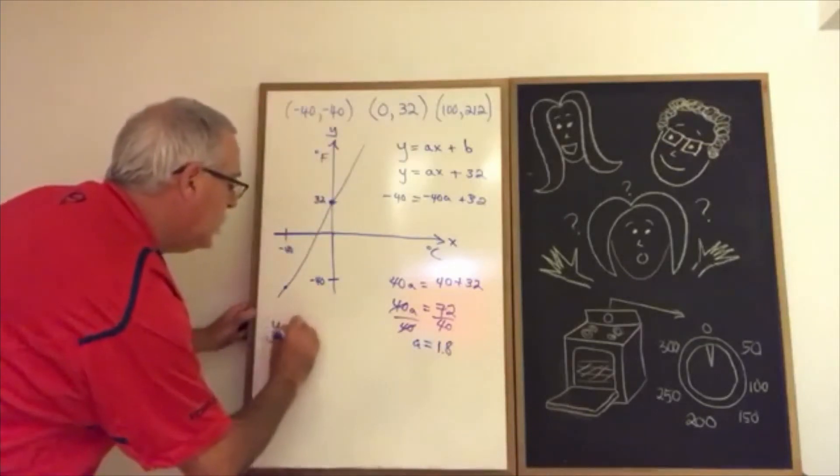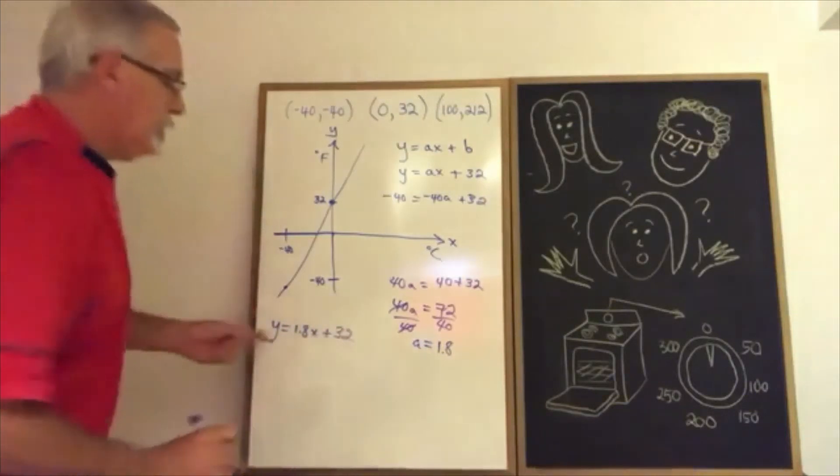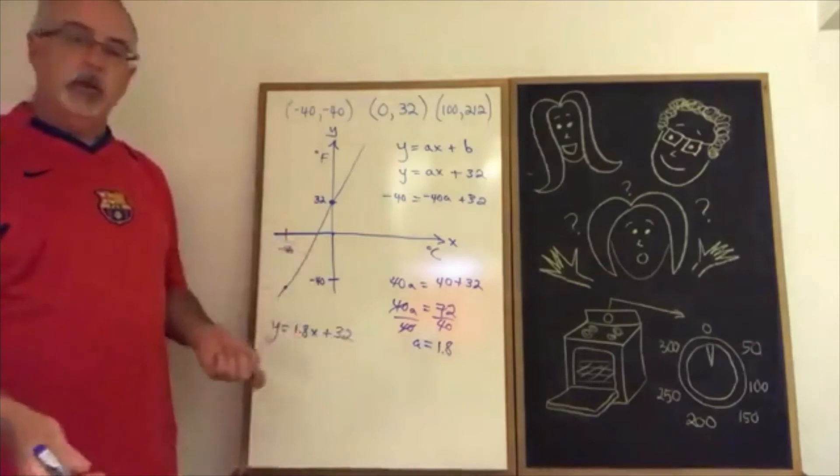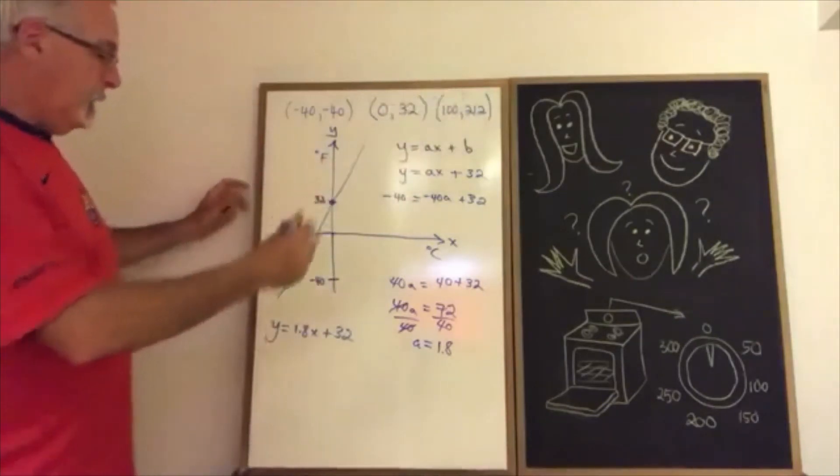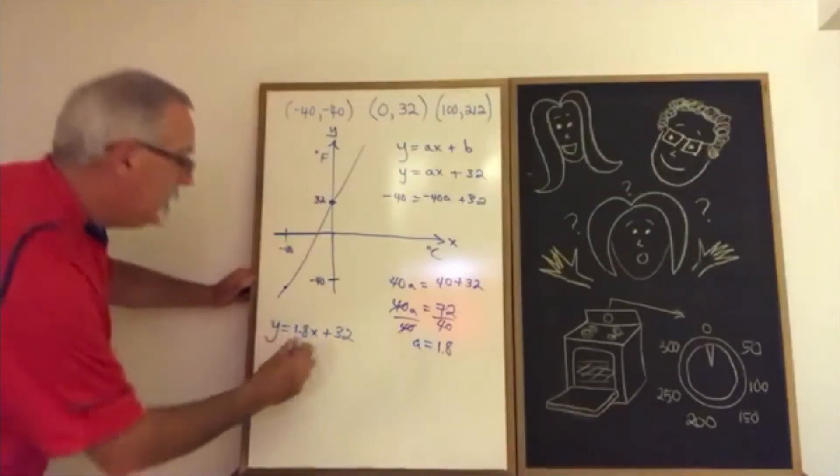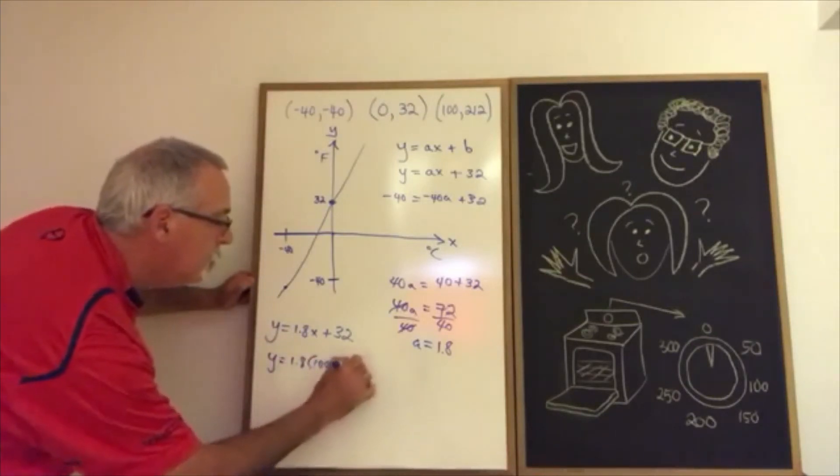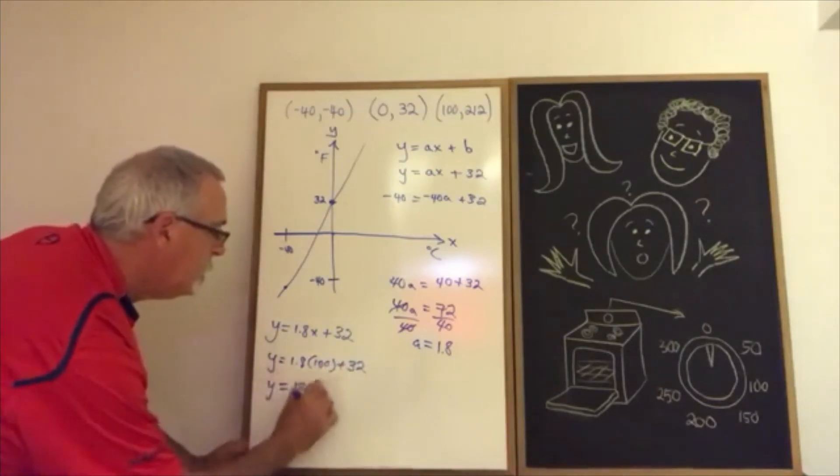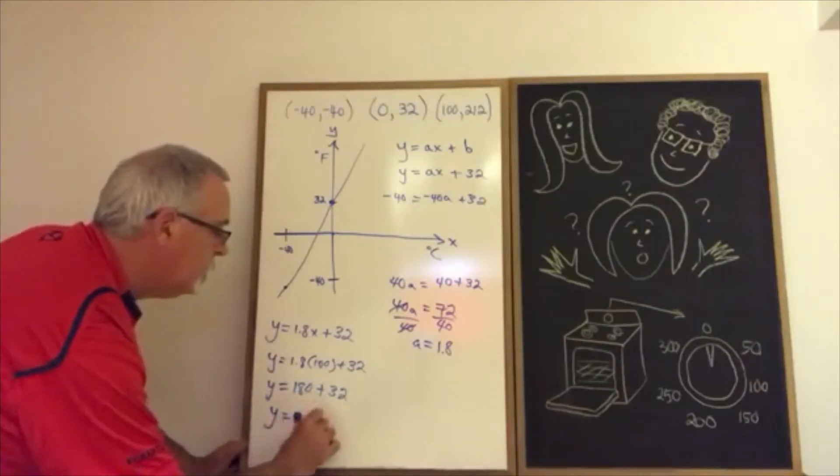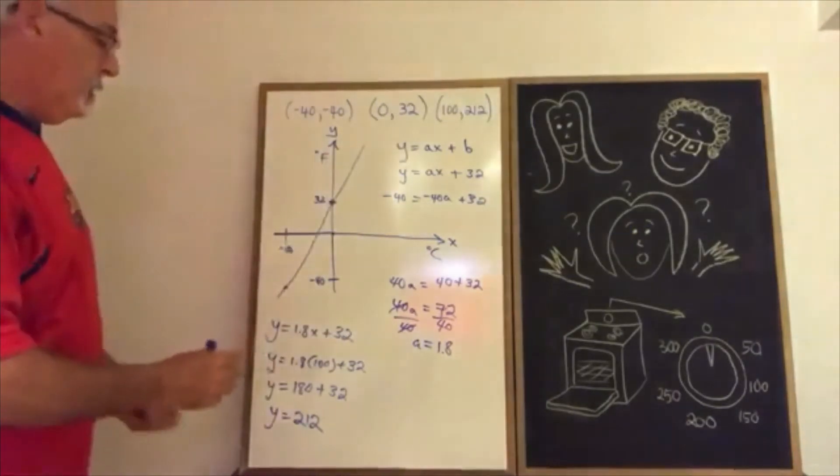I know my equation: y equals 1.8x plus 32. I should be able to use this equation to find any other points I want, but I'm going to start by verifying with this 100, 212. The 100 is the Celsius, which is the x, so I have y equals 1.8 times 100 plus 32. 1.8 times 100 is 180, and 180 plus 32 is indeed 212. So we have verification that our equation works.